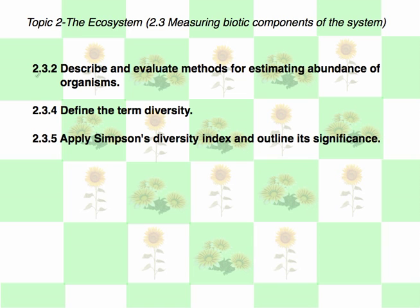We continue our look at topic two, the ecosystem, specifically at 2.3.2 — to describe and evaluate methods for estimating the abundance of organisms. Abundance is a key term we will define. We will also define the term diversity, apply Simpson's Diversity Index, and outline its significance.